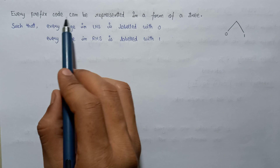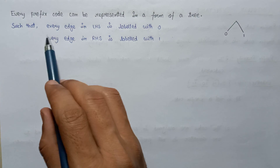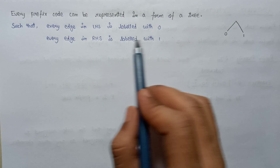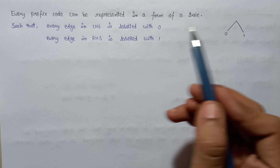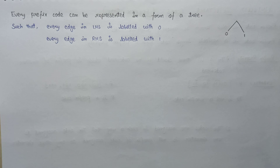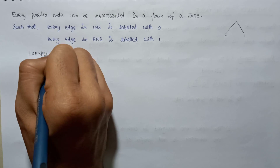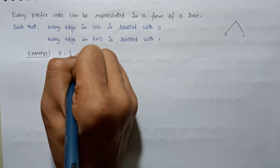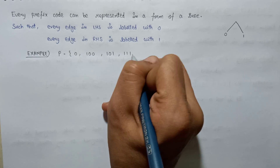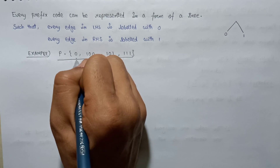Every prefix code can be represented in the form of a binary tree, labeled with 0s and 1s, such that every edge on the left-hand side is labeled with 0 and every edge on the right-hand side is labeled with 1. Let's consider the example set P given as: 0, 100, 101, and 111.